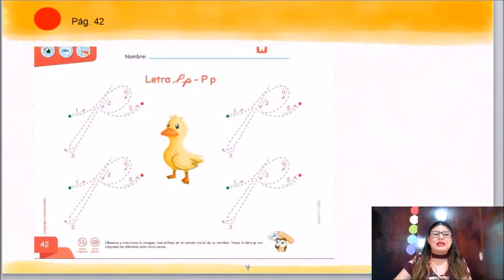Ahora, ya que recordamos un poquito su sonido, algunos objetos que comienzan con la letra y el trazo, vamos a empezar a trabajar en nuestro libro. Para trabajar en nuestro libro, necesito que te dirijas a tu código de color rojo y busques tu página 42. El 42 es un 4 con un 2. Ya que estés ahí, vas a observar esta imagen que tienes en la pantalla.